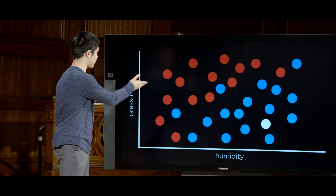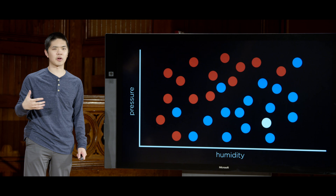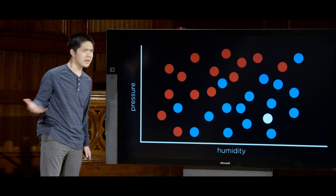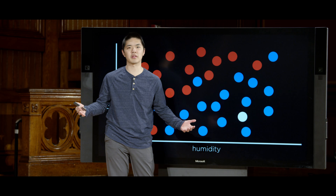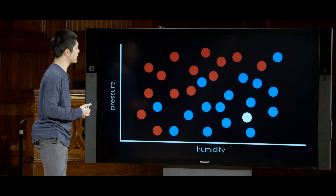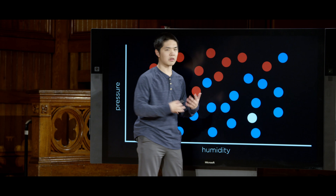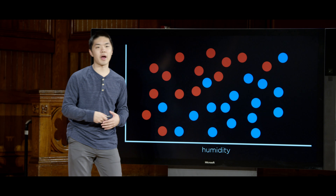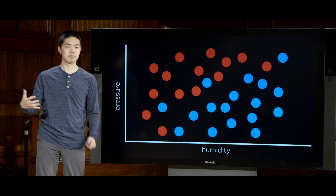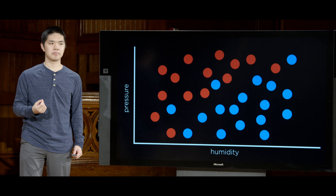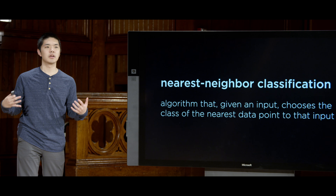Looking at the graph, most people would agree the white dot probably belongs to the blue category. Why? Because it looks like it's close to other blue dots. That's not a very formal notion, but we can formalize it: because the nearest point to this white dot is blue, we might say it should be categorized as blue — that day is going to be a rainy day based on that input. It might not be totally accurate, but it's a pretty good guess. This type of algorithm is actually known as nearest neighbor classification.